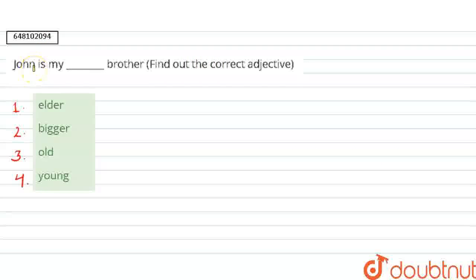Hello everyone, so let's start with our question. Here our question is John is my blank brother. Find out the correct adjective. And the first option we have is elder, second is bigger, third is older and the fourth one is young. So these are our options and now we have to find out the most suitable that will fill in the blank.